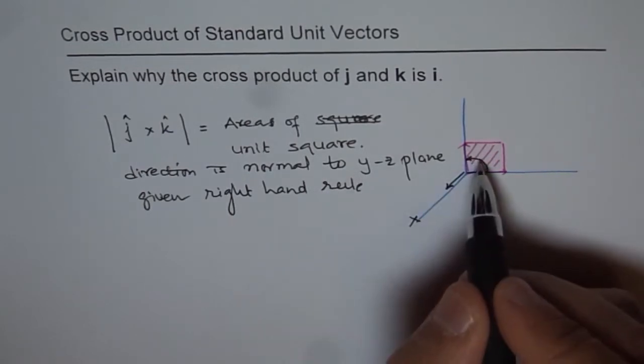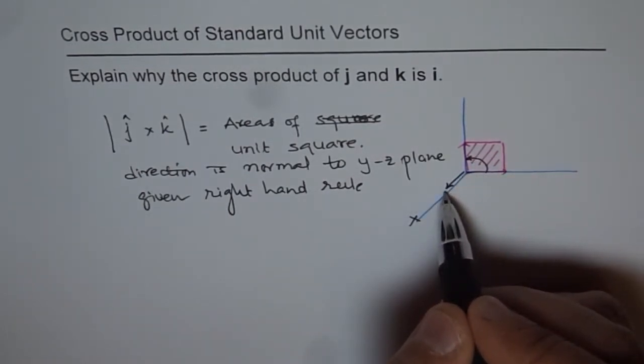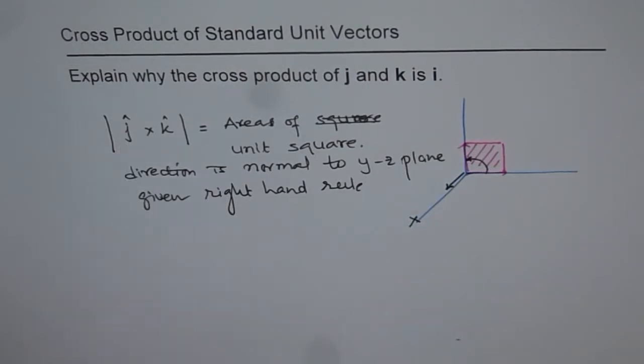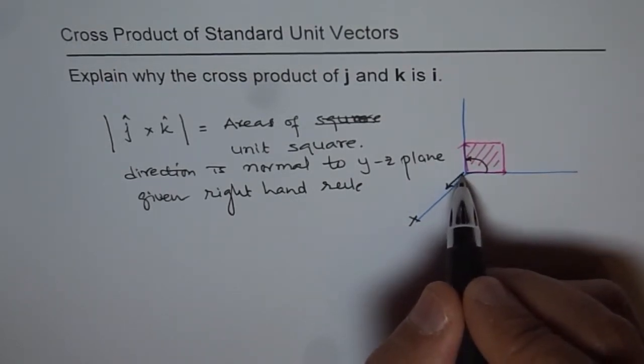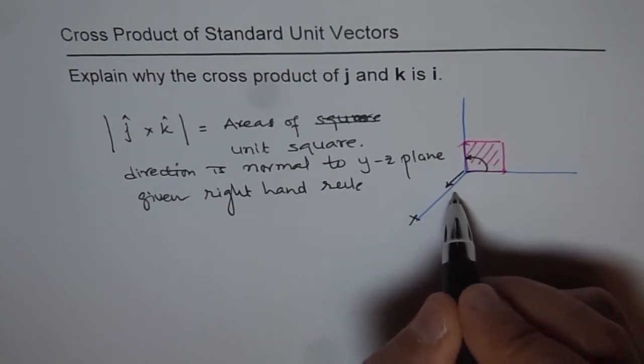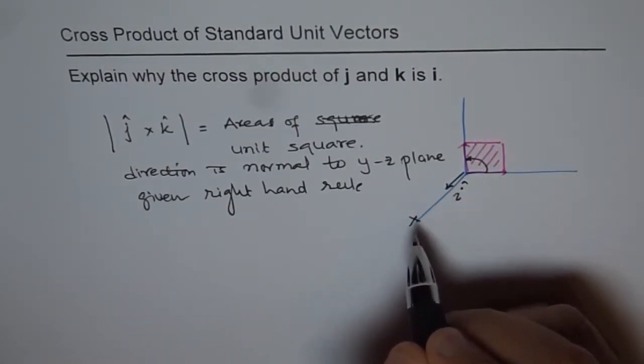And the area of the square gives us the length of the vector, which is j cross k. And since the area is 1, the length has to be 1. So a vector of length 1 in the direction of x is i. So i is a unit vector in the direction of x.